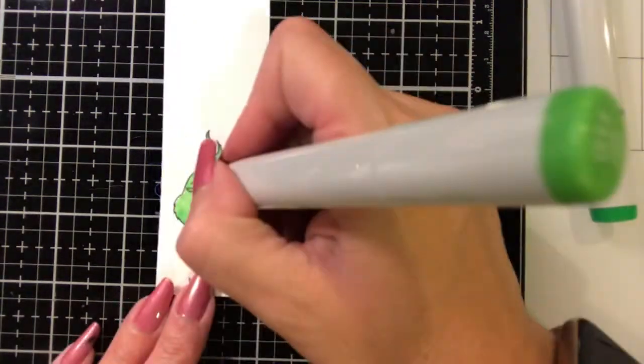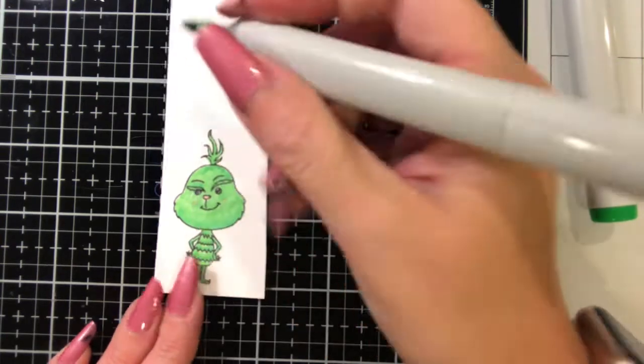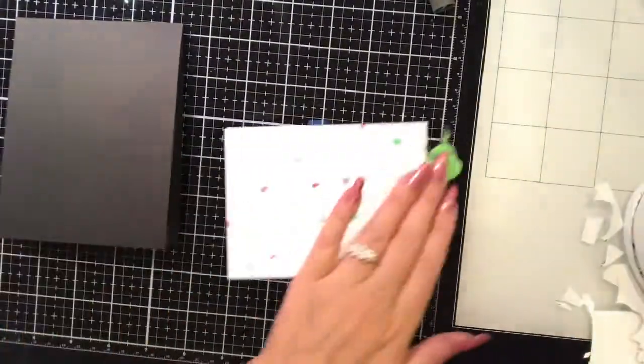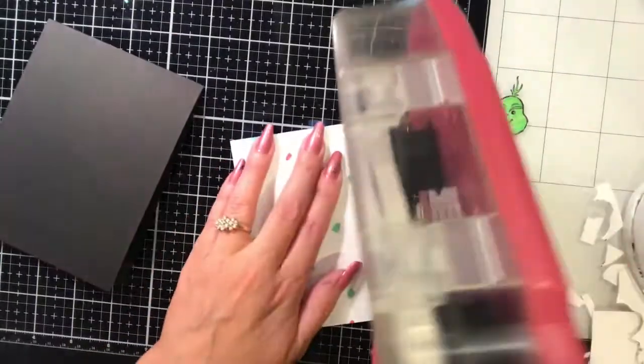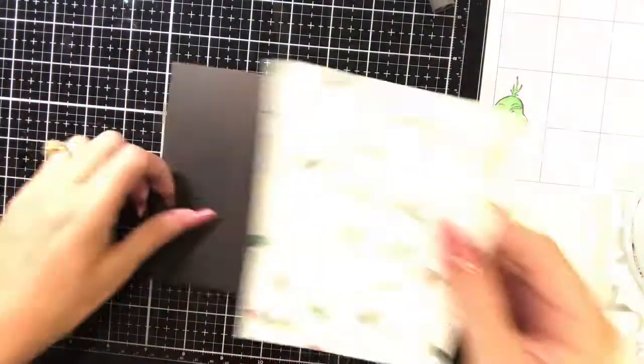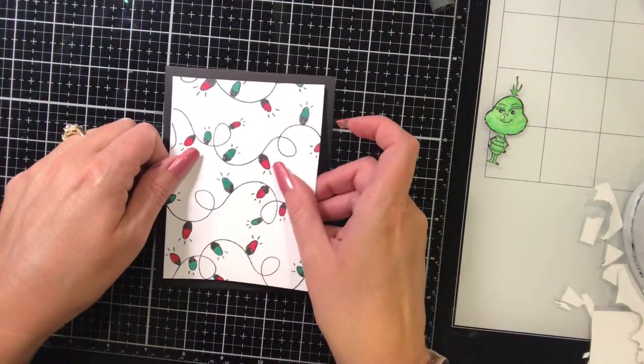And then I also did put that R20 on his cheeks to give him a little bit of cheeks there. So I fussy cut that out and then used my black marker to go around the edges of it and to make it look more finished.